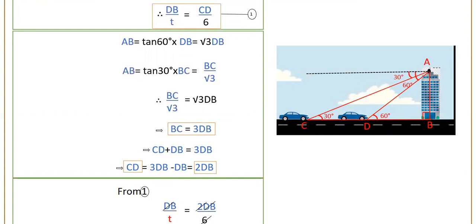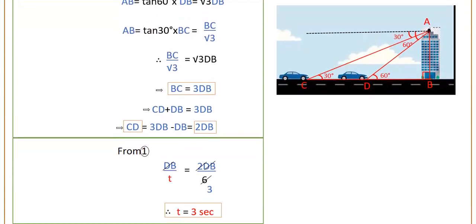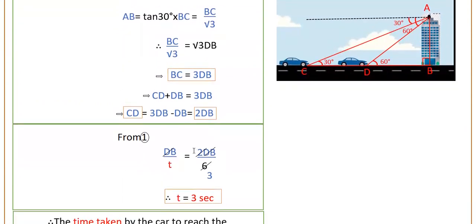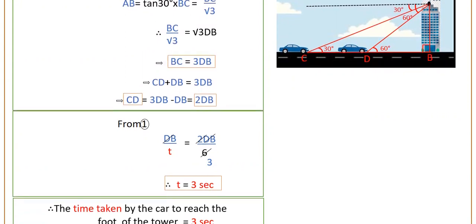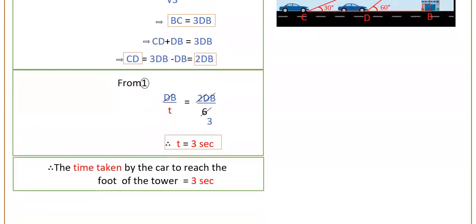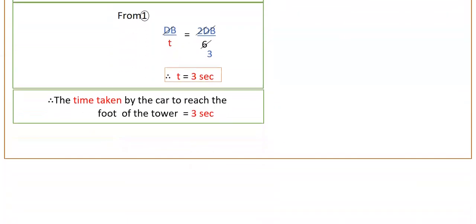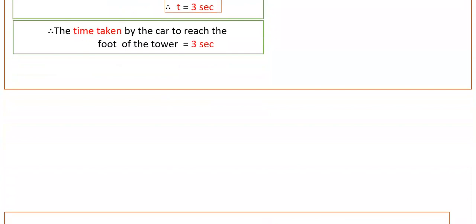Substituting CD = 2·DB into the first equation: DB/t = 2·DB/6. Cancelling DB from both sides gives t = 6/2 = 3 seconds. Therefore, the time taken by the car to reach the foot of the tower is 3 seconds. Please practice these questions.